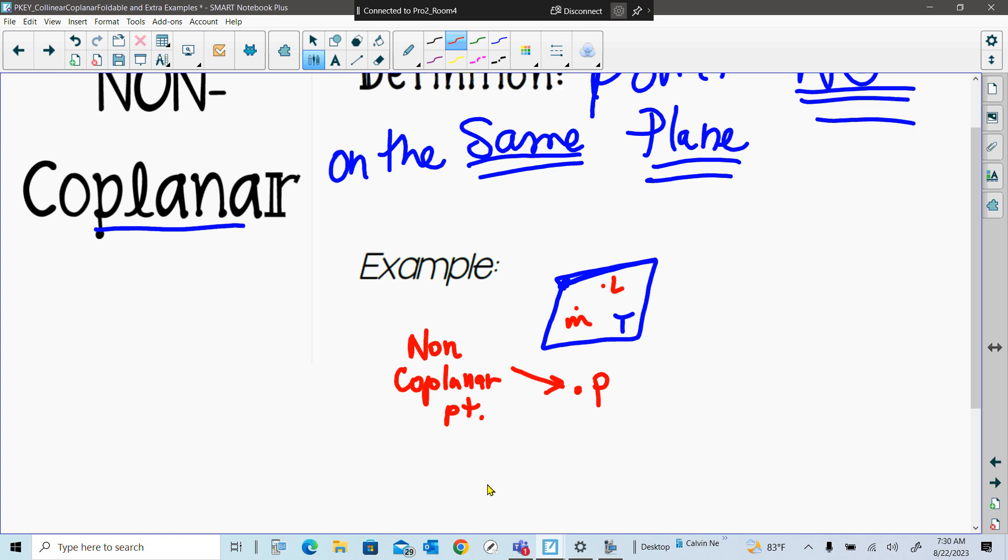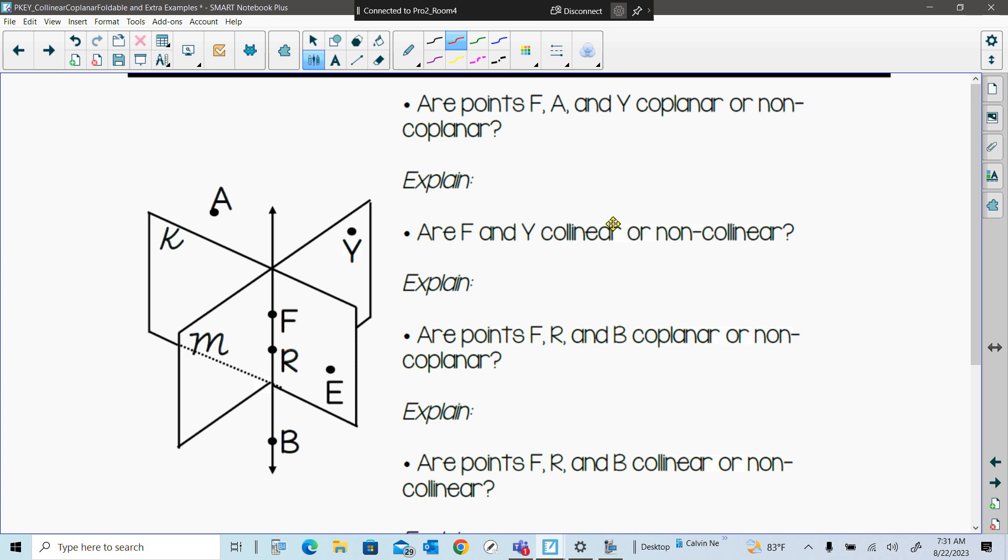All right, so the inside is us practicing our understanding of these terms. Anyone still need this one? All right, so let's go to practice. So they want us to answer and explain. All right, so the first is our points F, and I'm just going to highlight them. Points F, A, and Y, coplanar. So here's my F, there's my A over here, and then this is my Y. Would those three points be coplanar? What does that mean? No, they're not on the same line.